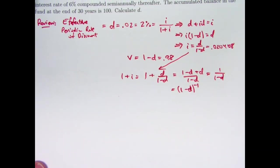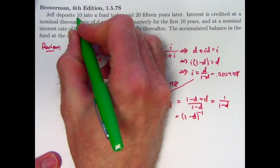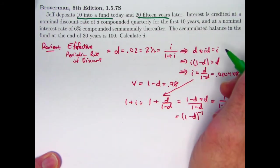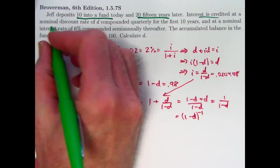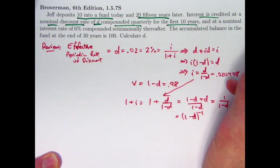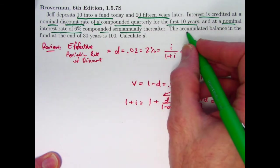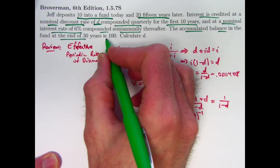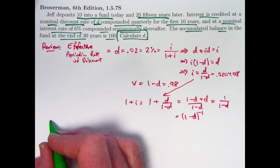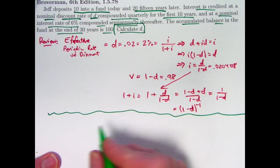Let's now go on to solving this problem. Jeff deposits 10 into a fund today and 20, 15 years later. This seems kind of complicated, but it's actually not quite as hard as it looks. Interest is credited at a nominal discount rate, D, compounded quarterly for the first 10 years, and at a nominal interest rate of 6% compounded semi-annually thereafter. The accumulated balance at the end of 30 years is 100. Calculate D is our goal. So this seems real complicated. It's not as bad as it seems. Just have to be patient and think things through carefully.